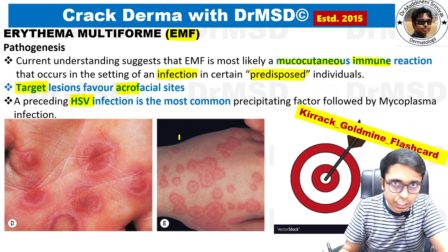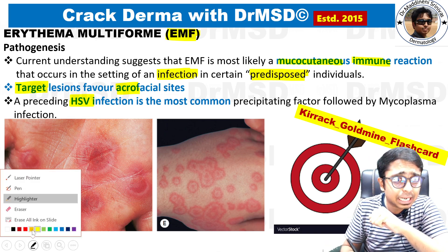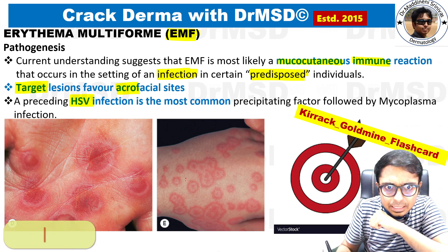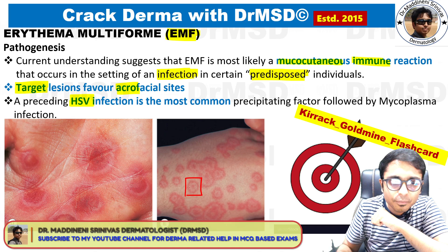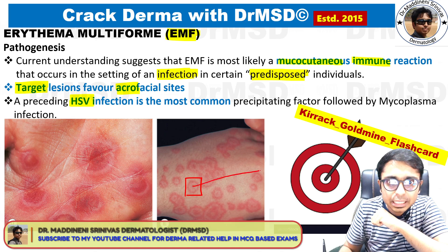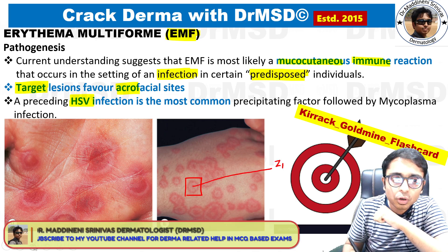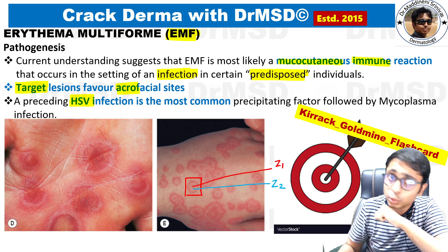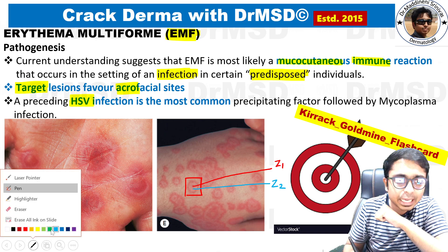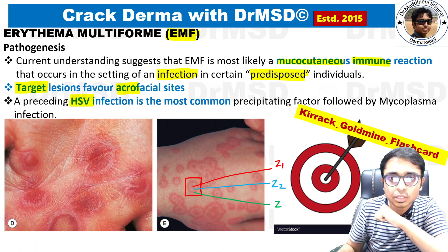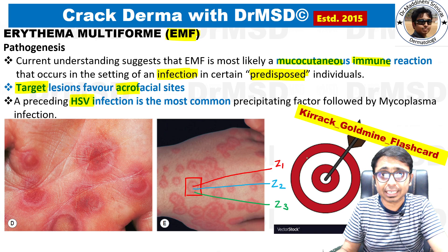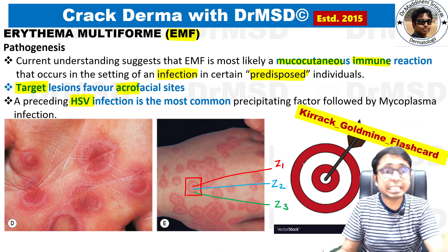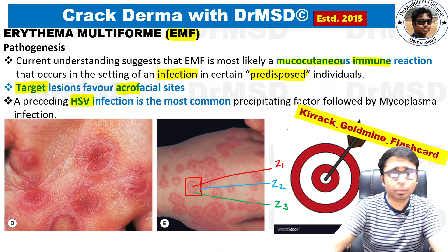A target lesion has three zones. At the very center is an erythematous area — zone one. Surrounding this is a zone of pallor — zone two. This is then surrounded by an erythematous rim — zone three. Together these three zones resemble a target used in archery or gunfire, which is why they are called target lesions.